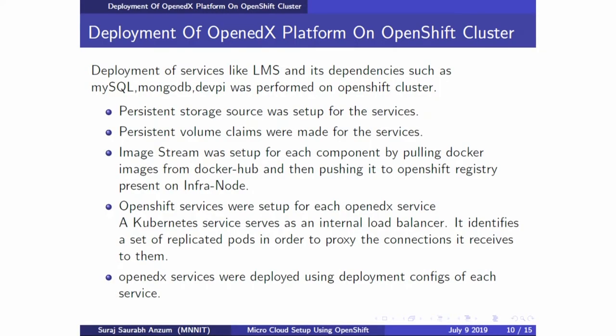After setting up the nodes and installing OpenShift, we moved on to Open edX installation. We converted the Docker Compose file of Open edX using Kubernetes Compose into various YAML files covering the LMS service, browsers like Chrome and Firefox, and dependencies like MySQL and Django. To deploy these services we needed persistent storage, which we created using an NFS server, so our data would not be lost when the app finished running. We then pulled various images from Docker Hub, pushed them into our OpenShift registry, and used deployment configs to deploy these apps.